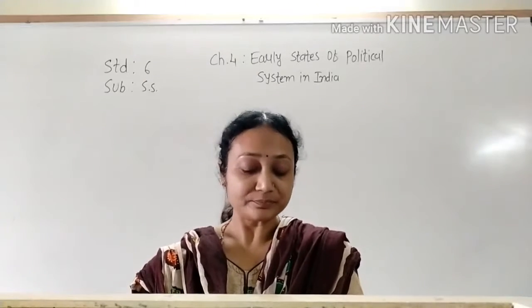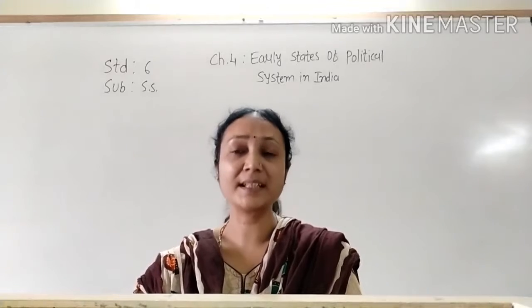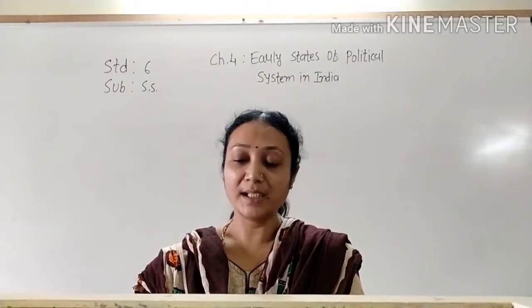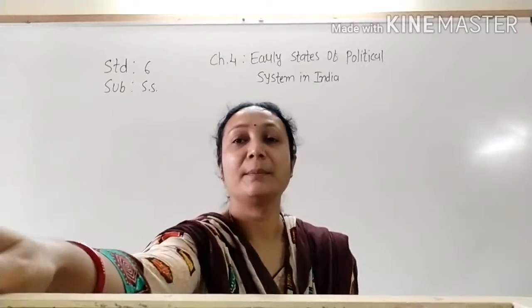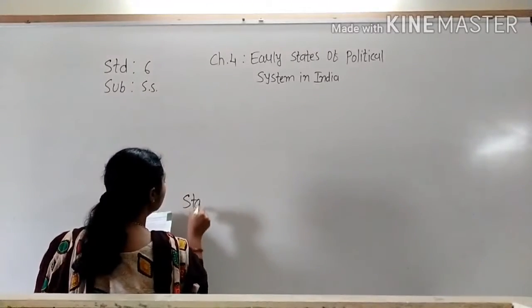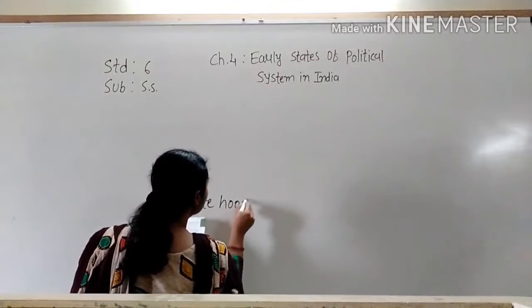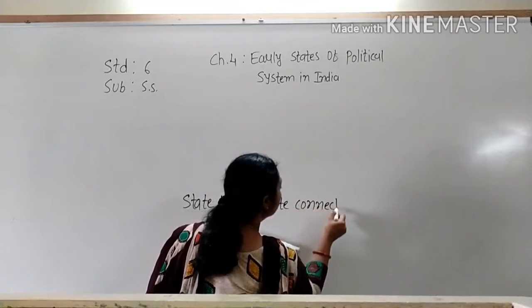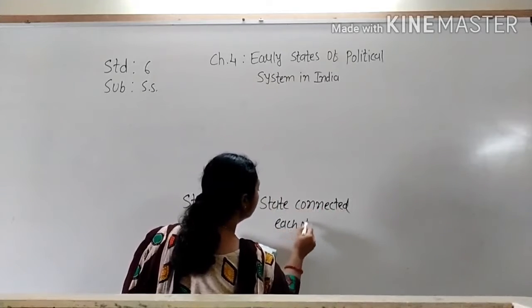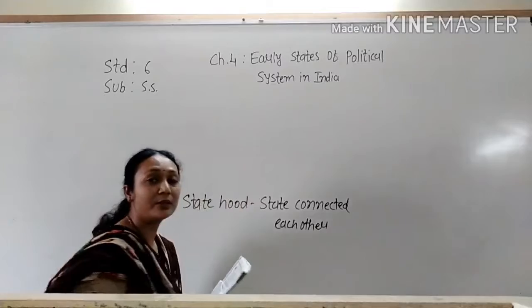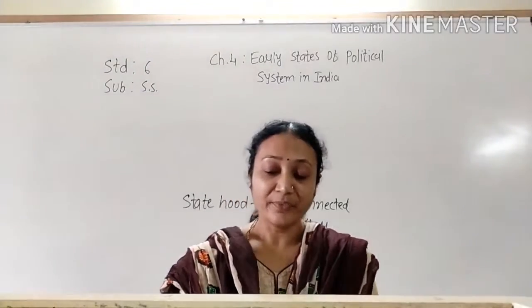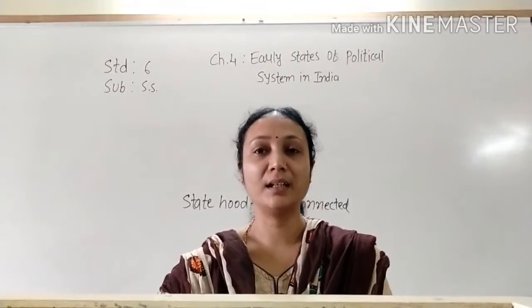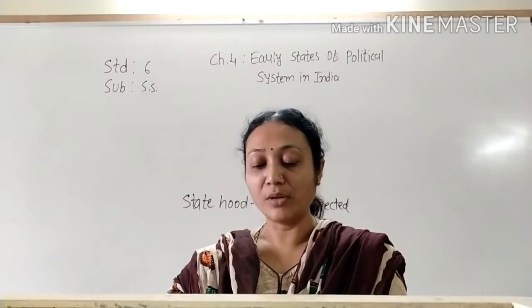In the Rig Vedic period, the statehood was similar to that of a Kabila, meaning a tribe or group of people. The Rig Vedic period refers to the time of the existence of the Rig Veda. The head of the Kabila was called Rajanya.